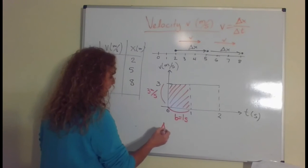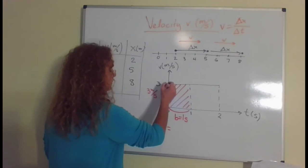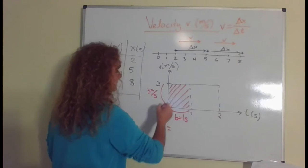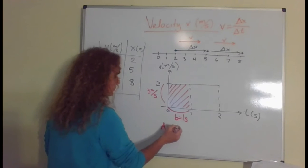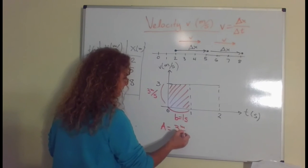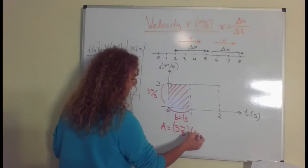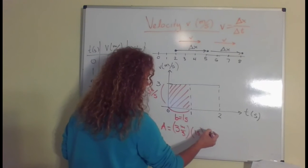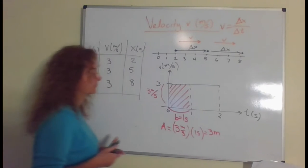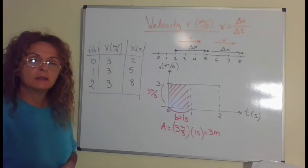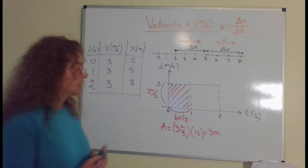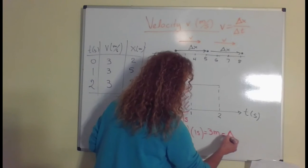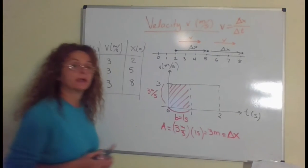So the area between the graph and the time axis, under the graph as we say, is 3 meters per second times 1 second, and it is 3 meters. What we can see is that what I found with the area is actually the displacement that happened at that second.